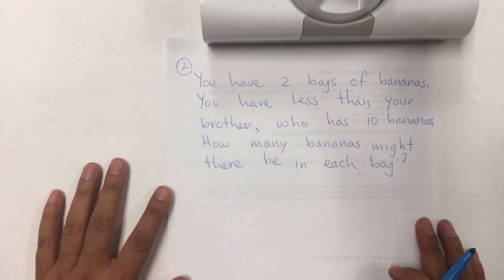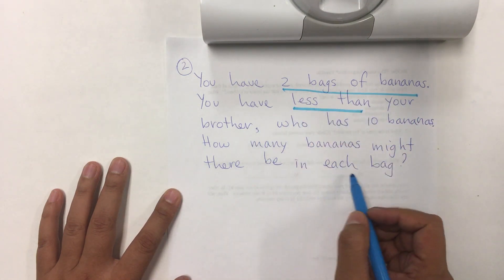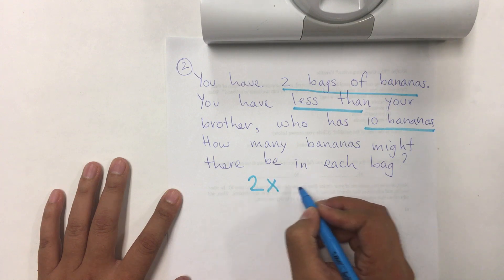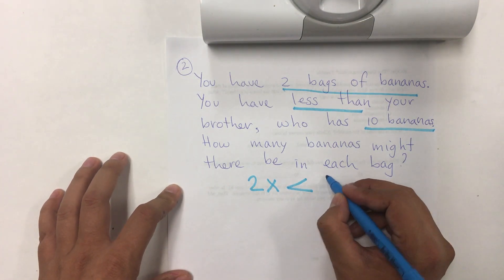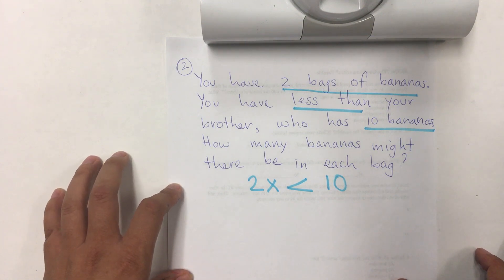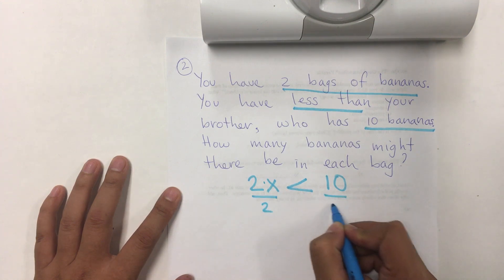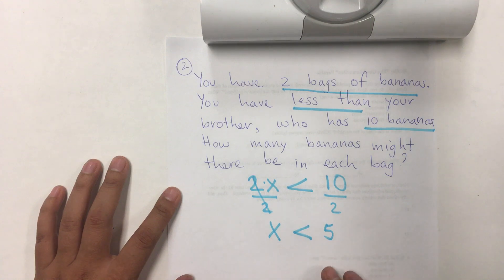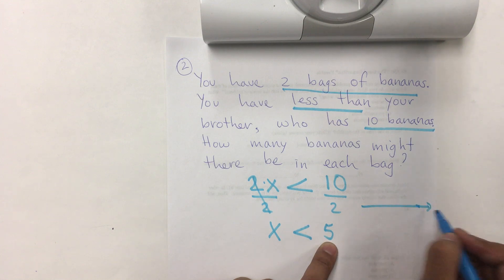Let's do another example. It says you have two bags of bananas. You have less than your brother who has ten bananas. So, you have two bags of bananas. You have less than your brother. The less than is like this. And your brother has ten bananas. How many bananas might there be in each bag? We're going to divide. The opposite of multiplication is division. So, X is less than ten divided by two is five. That means that each bag has less than five bananas.